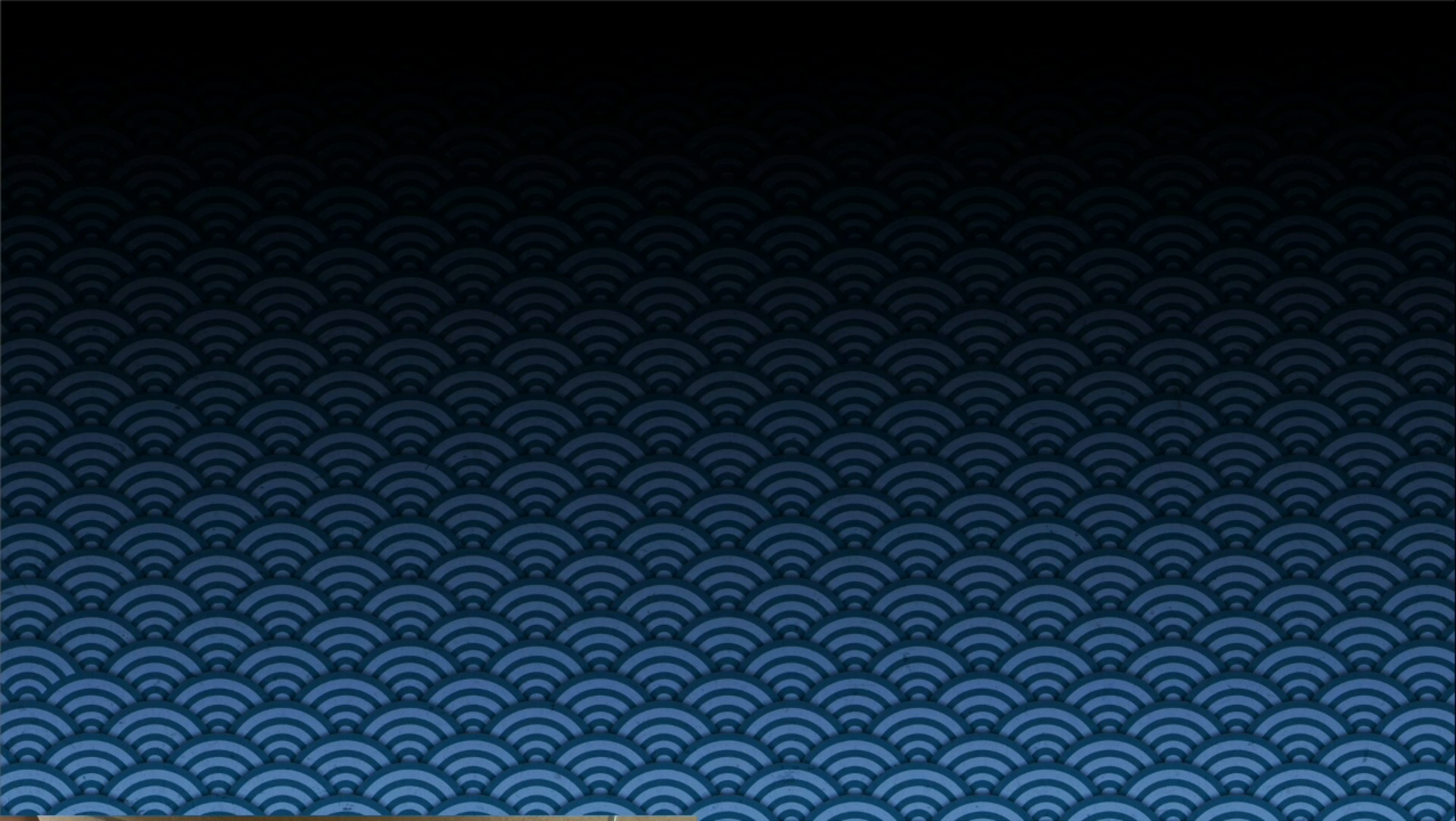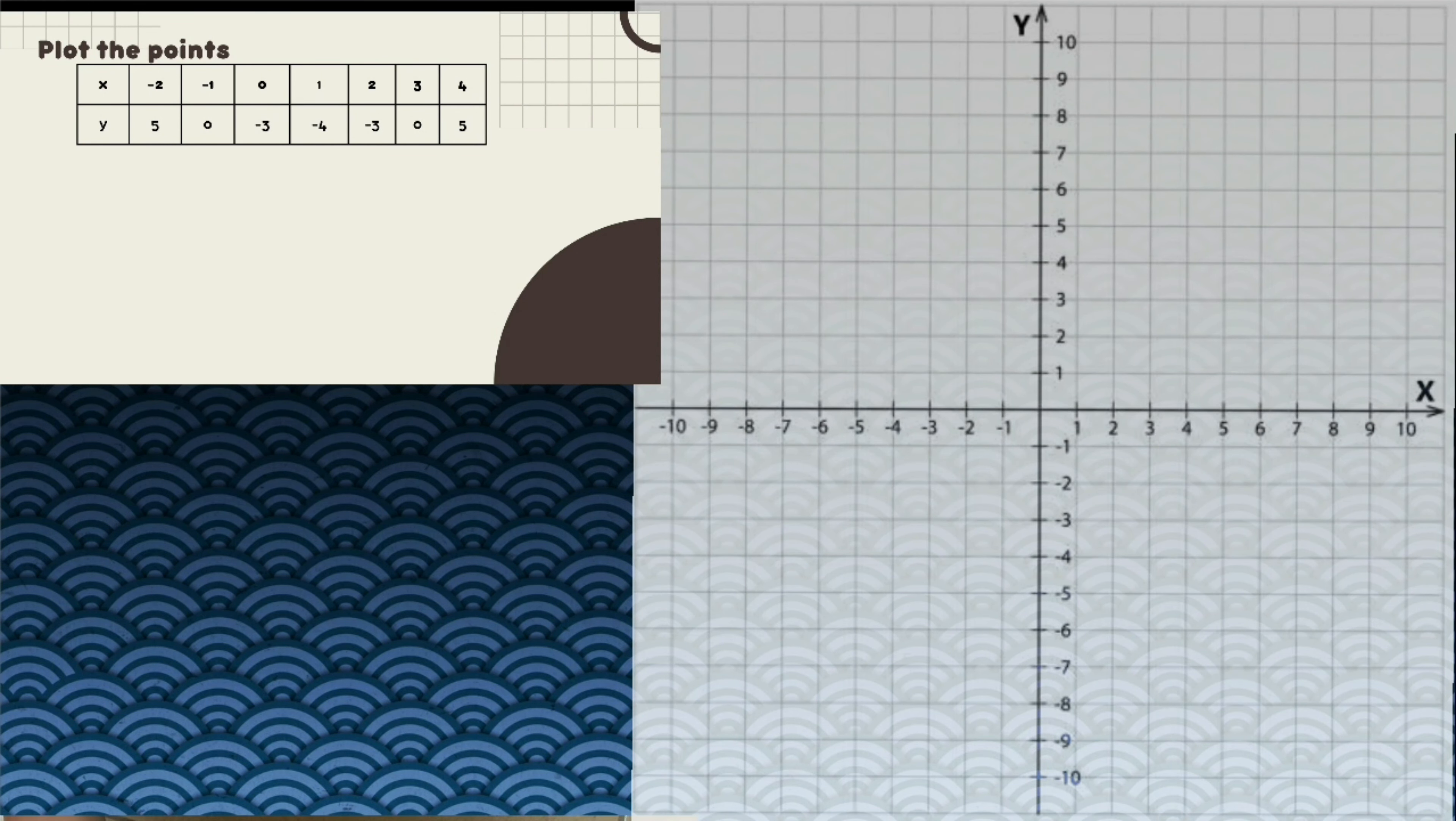After we construct a table of values, we will graph. So using the table of values we obtained, we can now plot its points on the Cartesian plane.